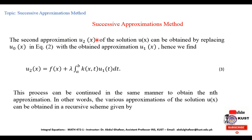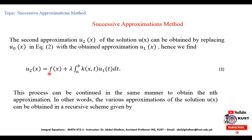The second approximation u2(x) of the solution u(x) is obtained by replacing u0(x) in equation 2 with the obtained approximation u1(x). Hence, u2(x) = f(x) + λ∫[a to b] k(x,t) u1(t) dt. Equation 3 is obtained from equation 2 by replacing u0(t) with u1(t). Similarly, the third approximation is found by replacing u2(x) with u3(x) and u1(t) with u2(t). This process continues to obtain the nth approximation.